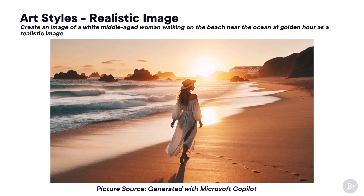Let's start with art styles. It's very important that you specify the type of image you want from Copilot, as it will make a huge difference. In this example, I'm asking Copilot to create an image of a white, middle-aged woman walking on the beach near the ocean at golden hour as a realistic image, and this is the result.